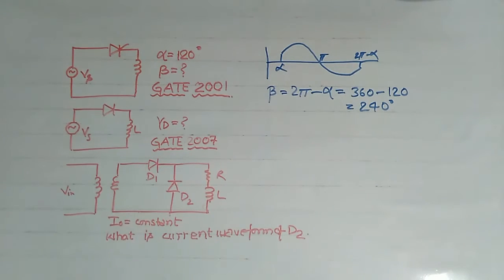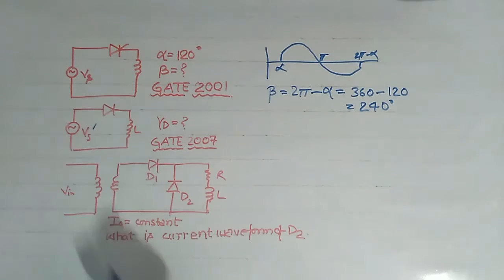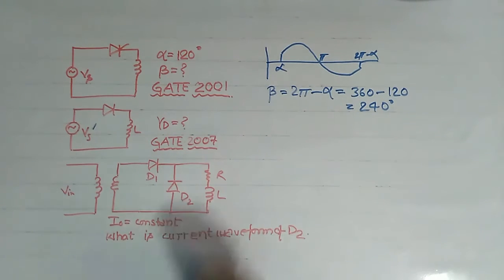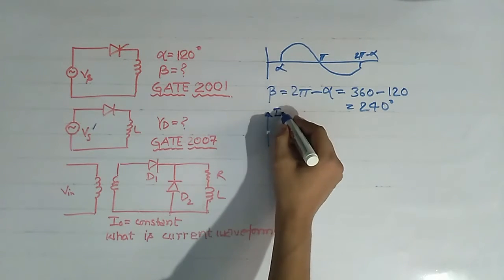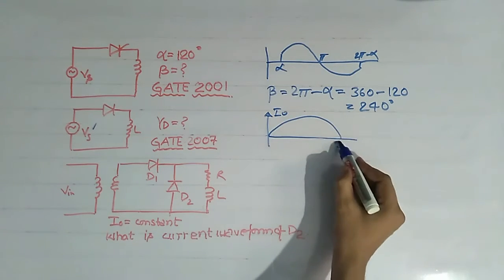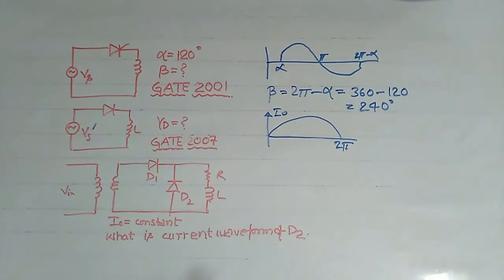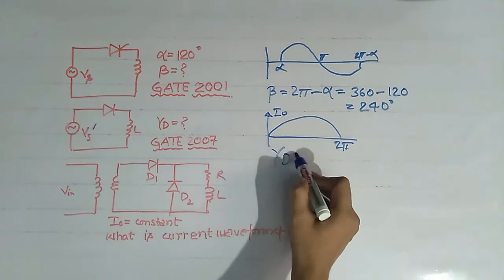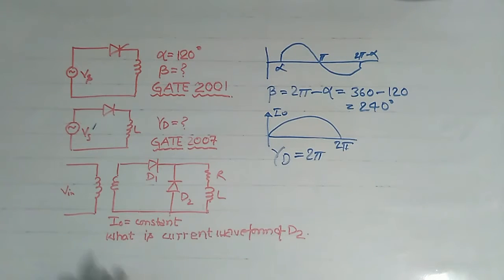This question was asked in GATE 2007. Here we have to find the conduction angle of the diode. The circuit has VS as a sinusoidal voltage source, a diode, and an inductor L — this is a one phase half wave uncontrolled rectifier with L load. For this rectifier, the output current I0 is positive from 0 to 2pi. The diode remains turned on as long as output current is positive, so the conduction angle of the diode equals 2pi.